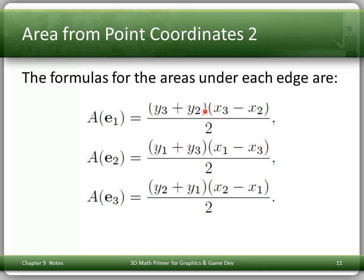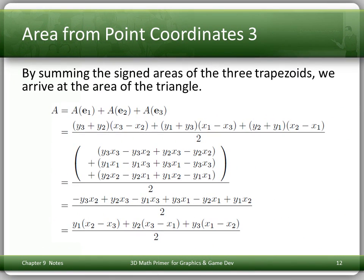The area under E1 is (y3 plus y2) times (x3 minus x2) divided by 2, and similar formulas hold for E2 and E3. The area of the triangle equals the sum of the three trapezoid areas. A lot of terms cancel out, leaving a simpler formula. We can also pull common factors — for example, y1 — to simplify further.